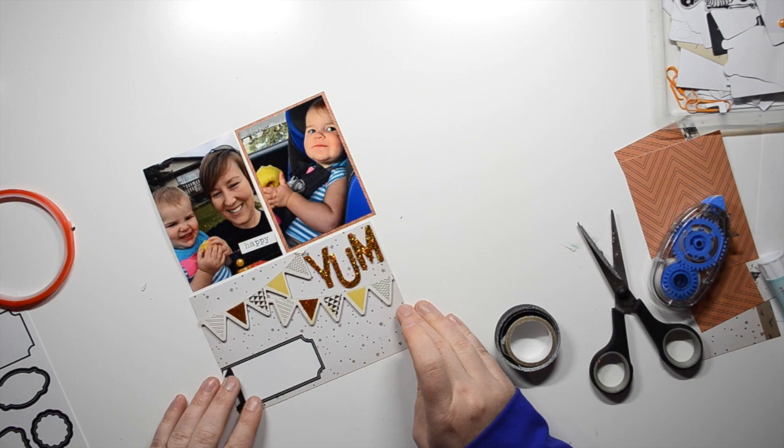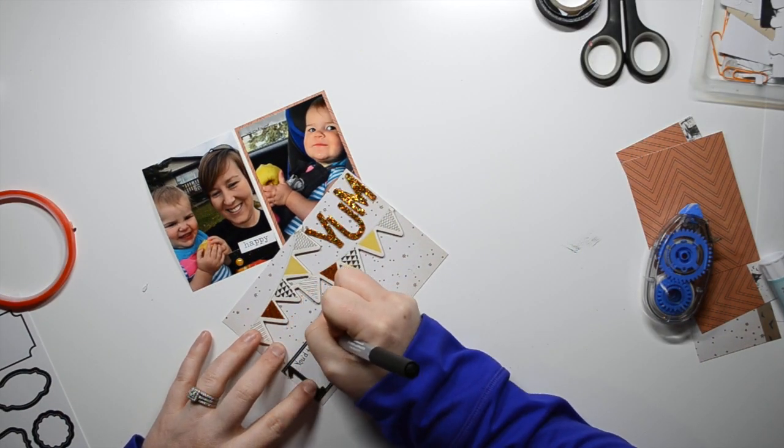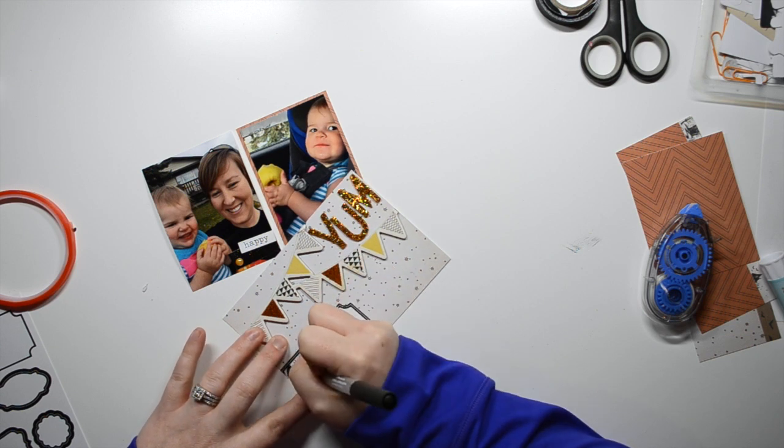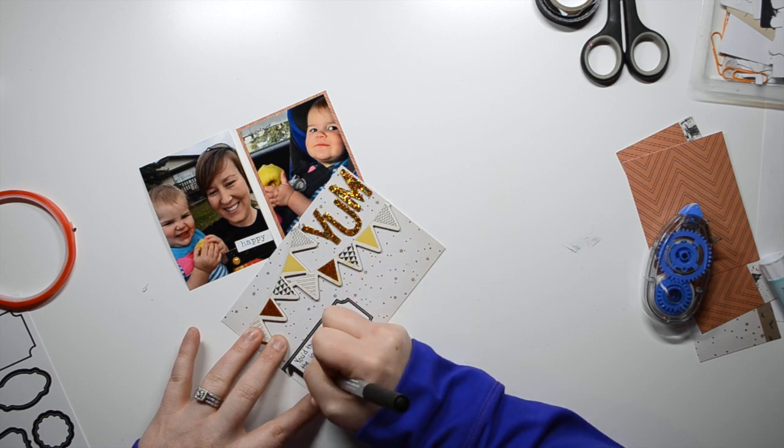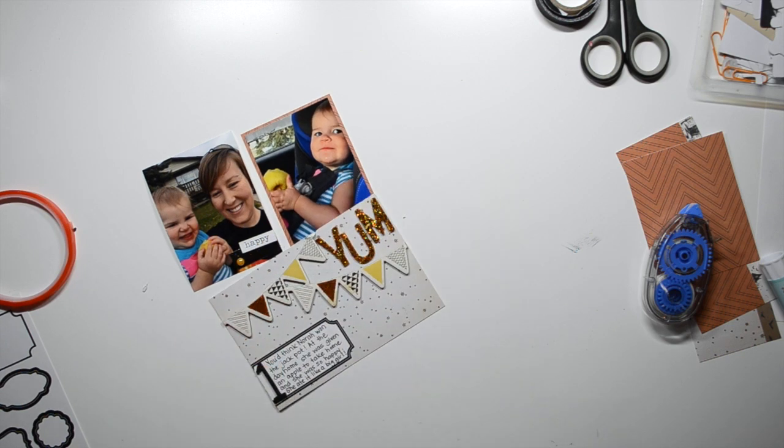So I end up just leaving the backing on and then using some of that adhesive just to adhere it down. Because it's kind of flaking off and stuff. And then I just find that tiny word sticker that says happy and put it on top. And I really like the way that that looks. It's really simple. But I just really like the way it turned out. And then I'm just adding some journaling about how happy Nora was with her apple and how she ate it like a big girl. The whole way home she was just like laughing and giggling about having this apple.